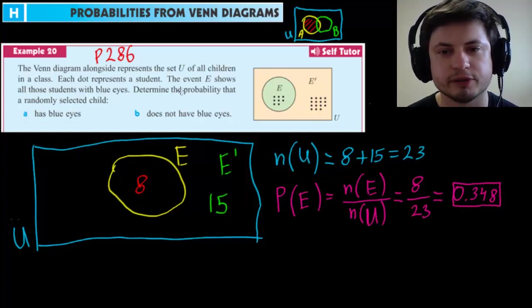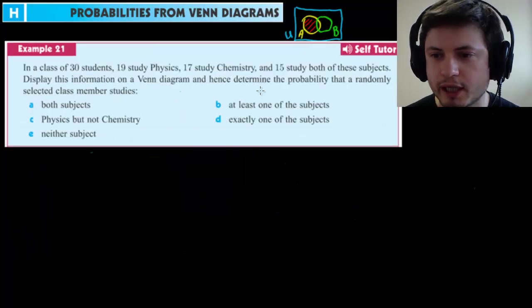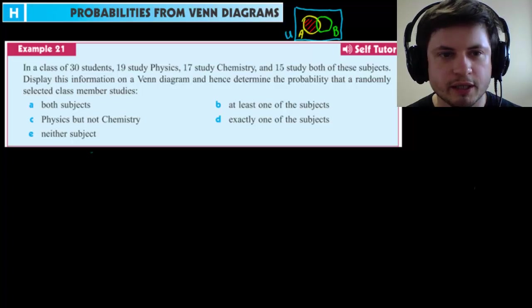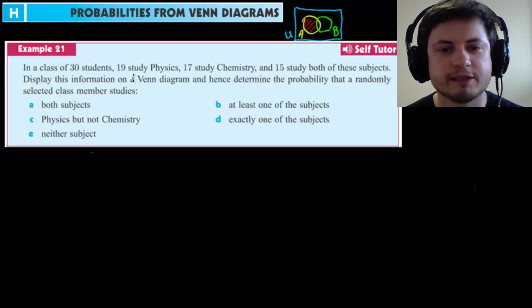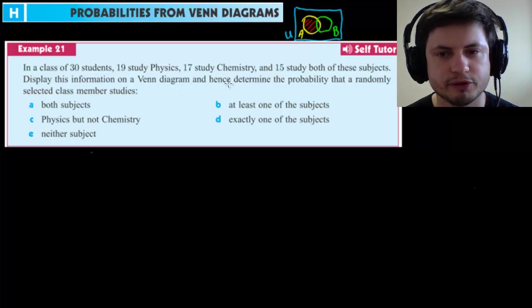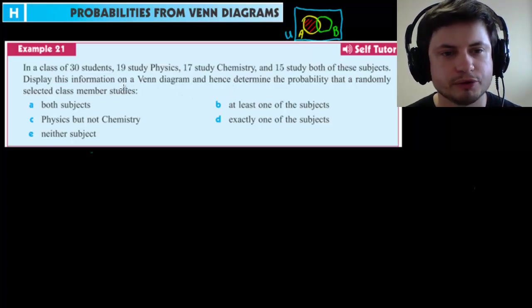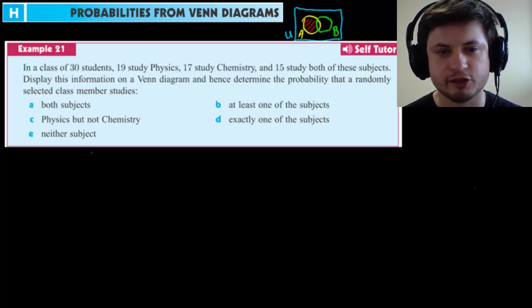Let's take a look at another example that's a little bit more challenging and see if we can do it as well. Let's take a look at example 21 from the next page here. The question is in a class of 30 students, 19 study physics, 17 study chemistry, 15 study both of these subjects. And what you need to do is display this information on a Venn diagram and hence determine the probability that a randomly selected class member studies any of these questions.